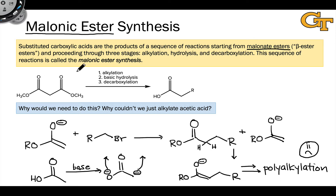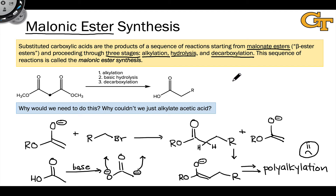Similar to the acetoacetic ester synthesis, the malonic ester synthesis involves three stages. First, alkylation through a selective deprotonation at the carbon between the two carbonyl groups, followed by treatment with an alkyl halide. Then basic hydrolysis, which converts the ester groups into carboxylic acids. And finally decarboxylation, which replaces one of the carboxylic acid groups with a hydrogen, leaving us ultimately with a monocarboxylic acid substituted with the new R group introduced as alkyl halide RX.